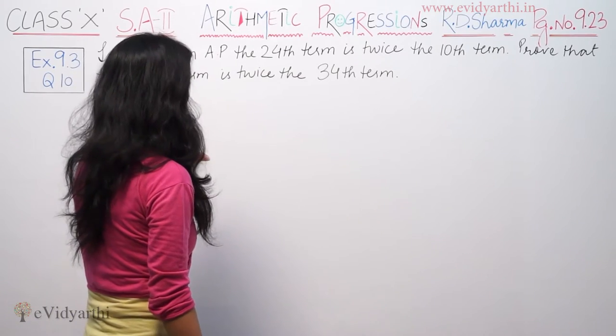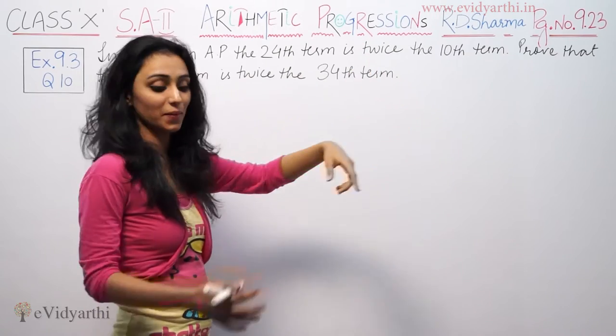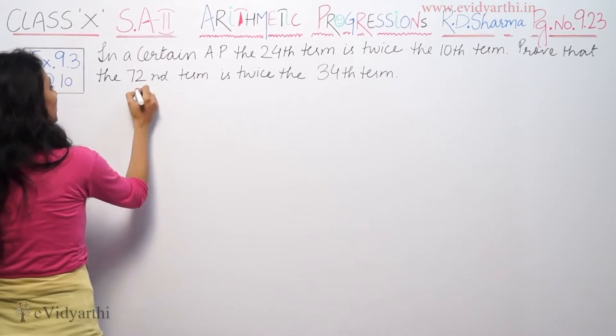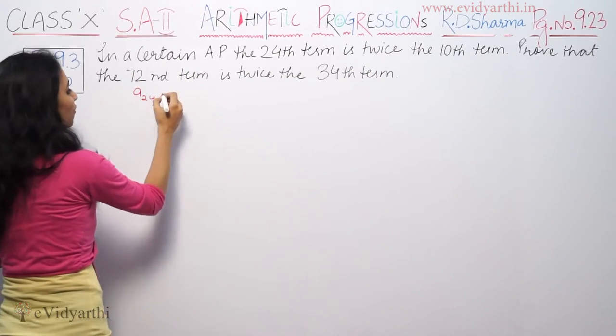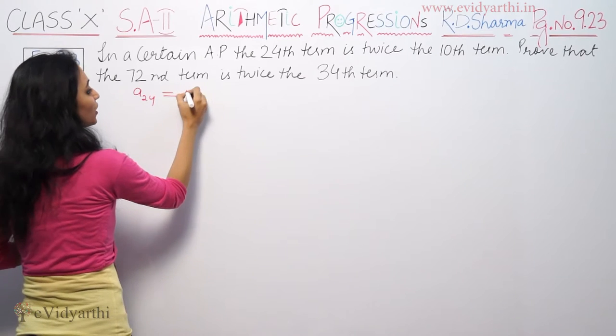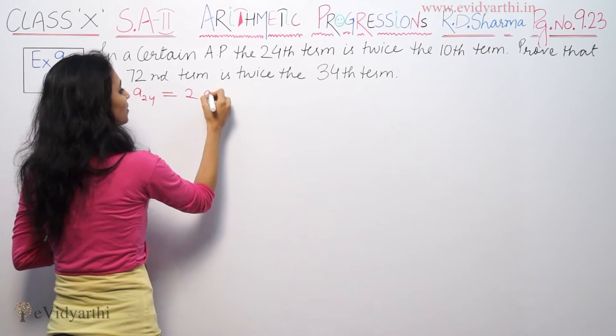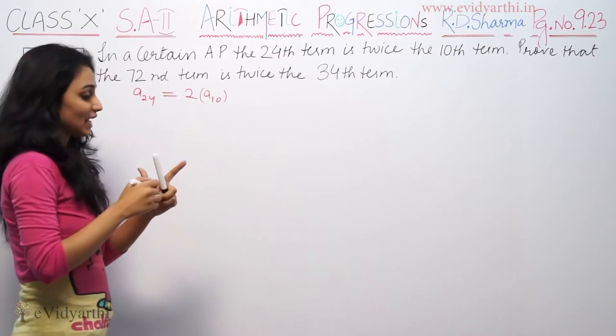It says, in a certain AP, the 24th term is twice the 10th term. We have given A24 is equal to twice the 10th term. This is given.